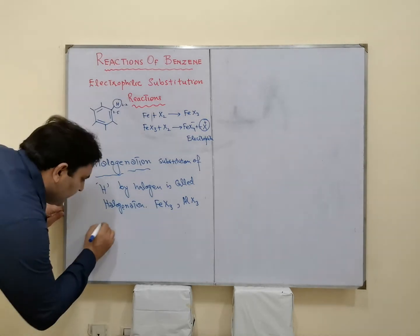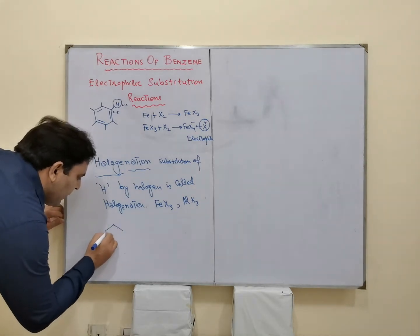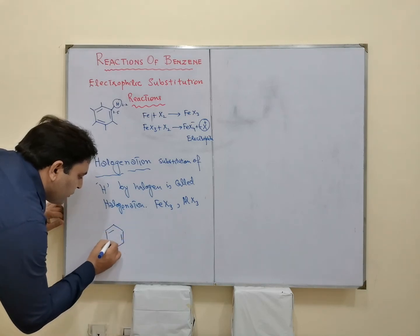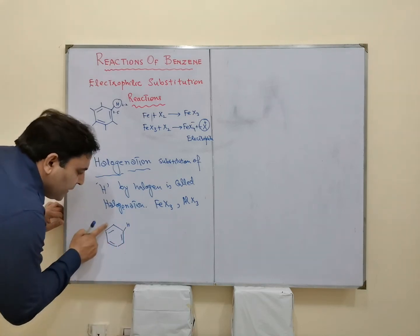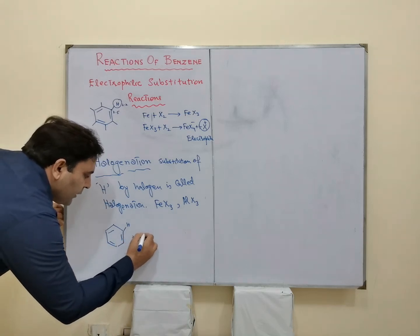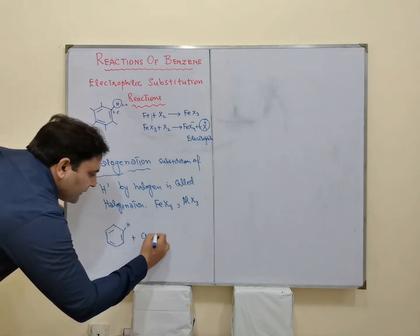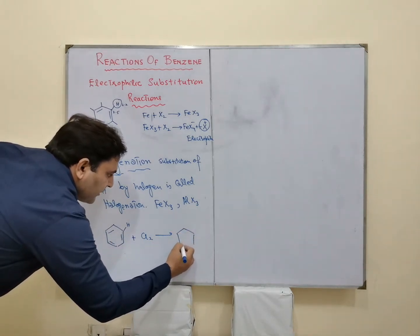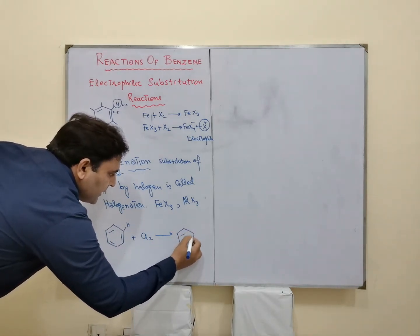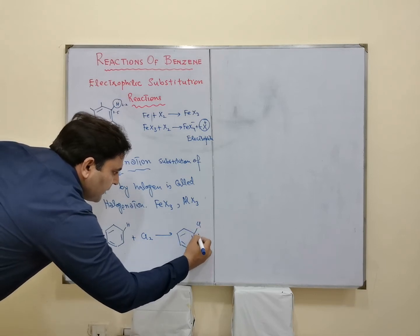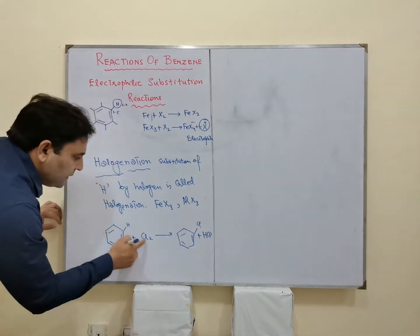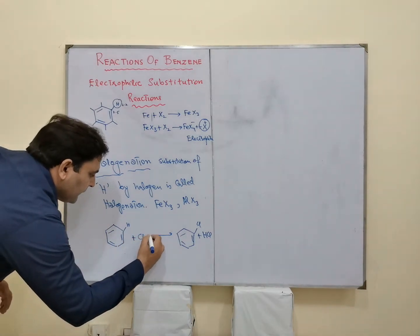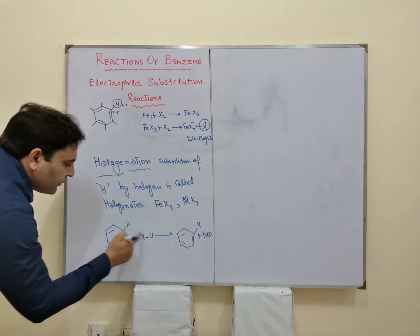ہمارا task یہ ہے کہ ہم نے Benzene کے کسی بھی Hydrogen کو — ہر Carbon میں سے Hydrogen ہٹ جائے گا — تو ہم اس کا reaction کروا دیں Chlorine کے ساتھ تو یہ Chlorine سے replace ہو جائے۔ رییکشن لکھ رہا ہوں: یہاں پہ Chlorine لگ جائے اور HCl بنا دیں، اور ایک Chlorine یہاں پہ لگ جائے۔